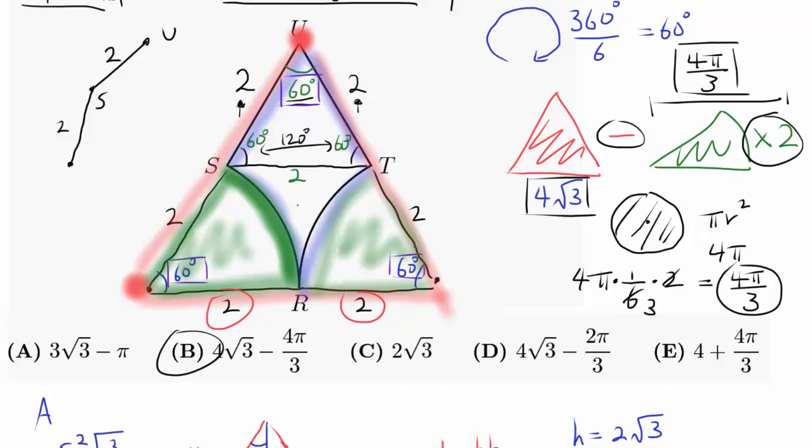Another way that you may have attacked this question is to find area of this purple equilateral triangle inside, and finding area of this funnel by finding area of this trapezoid, then subtracting out the areas of two sectors. That's also going to get you the same answer.